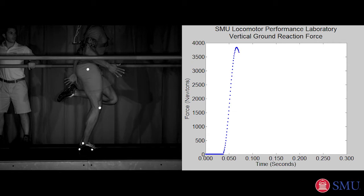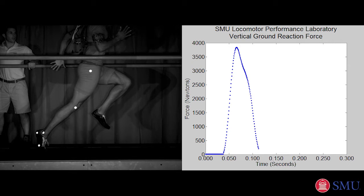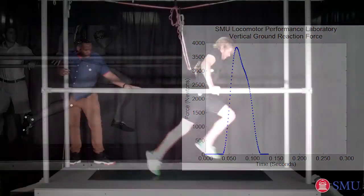To run fast, sprinters apply forces up to five times their body weight in less than 100 milliseconds on each leg. Here's distance runner Ryan Hall,